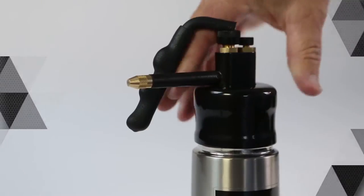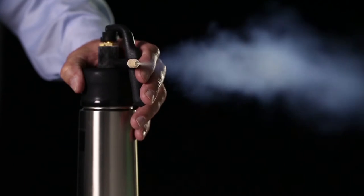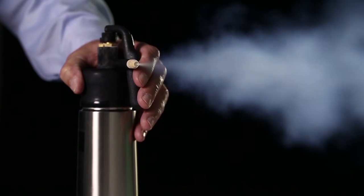Keep the flask in an upright position and firmly screw the turret onto the brass flask top. The flask will self-pressurise and will be ready to use in 60 seconds. The flask may be topped up at any time.